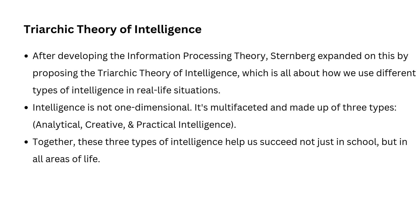The Triarchic Theory proposes three kinds of intelligence that work together. The first is the kind we typically think of — solving problems in academic or logical ways — which Sternberg called analytical intelligence. The second type is the ability to come up with new creative solutions to problems, which he called creative intelligence. The third type is practical intelligence — using your skills and knowledge in real-life, everyday situations, what we often call street smarts. In a way, the Triarchic Theory connects back to the information processing theory: when you use analytical intelligence, you follow steps similar to the information processing stages, like encoding, mapping, and applying knowledge. But Sternberg broadens the idea of intelligence by adding creative and practical dimensions.